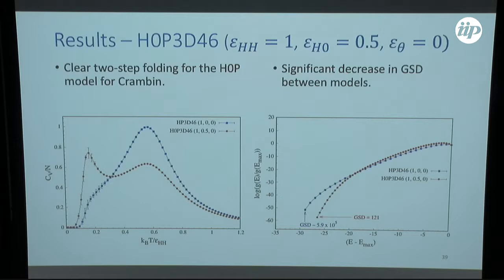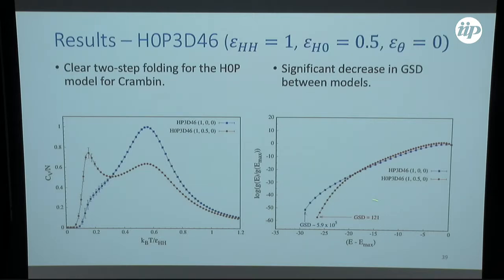Looking at the HOP model, where we add the neutral monomer with HH strength of one and HO strength of one-half, the specific heat now shows two distinct steps — two distinct signals — so we recover the two-step folding. The density of states curve looks similar, but the ground state degeneracy is now 121. This is much better than 5.9×10^5, but still very far from one, so we can do better.